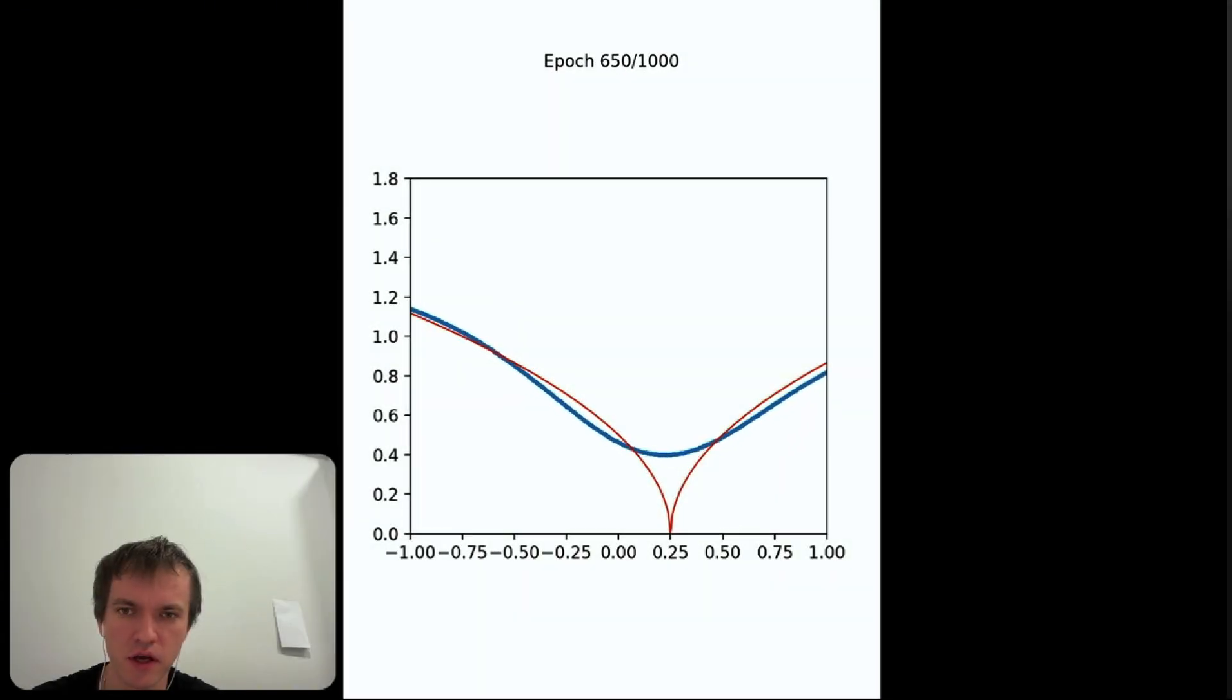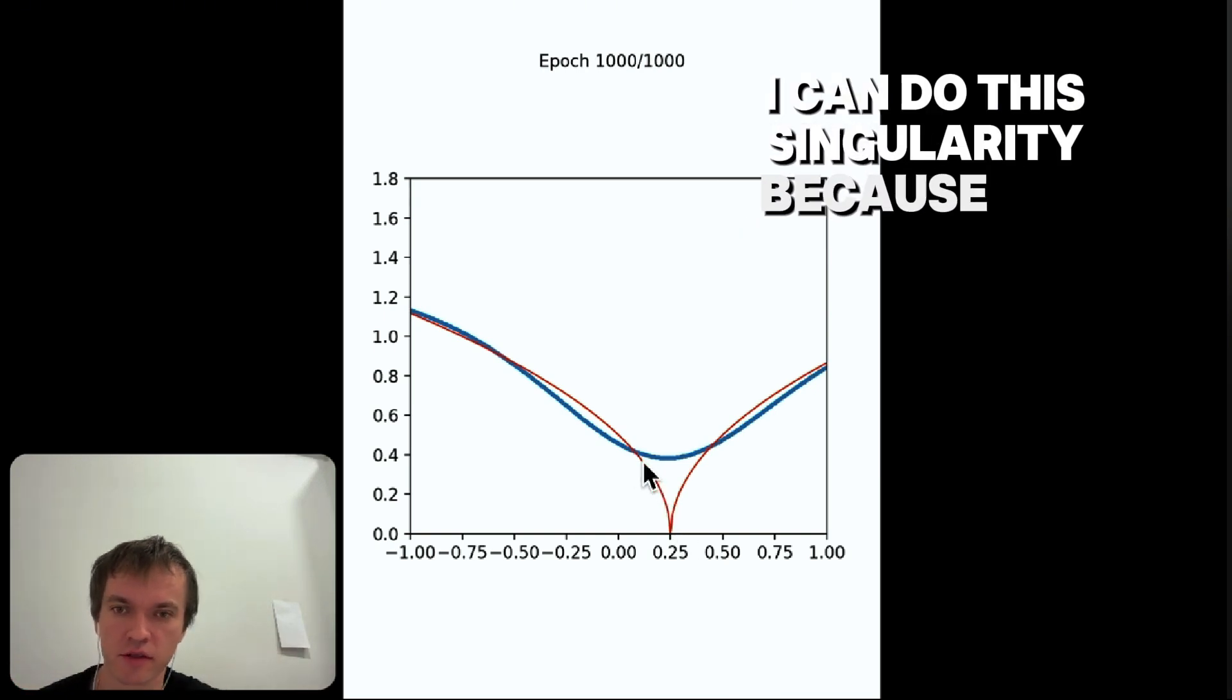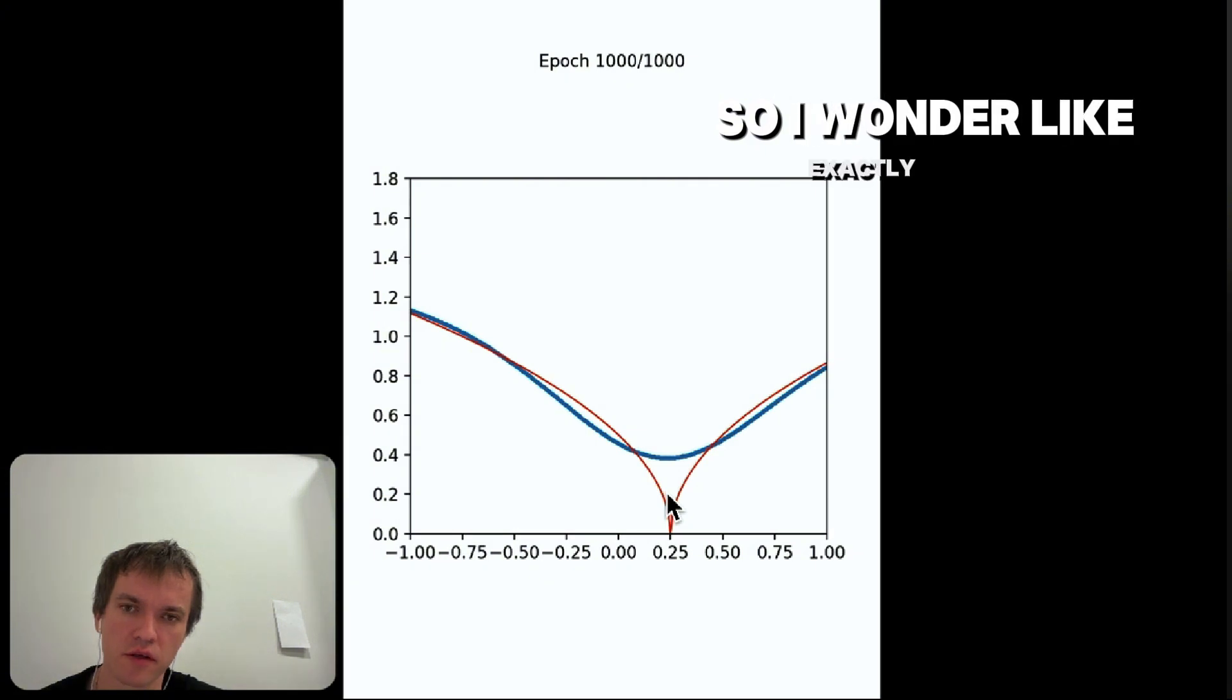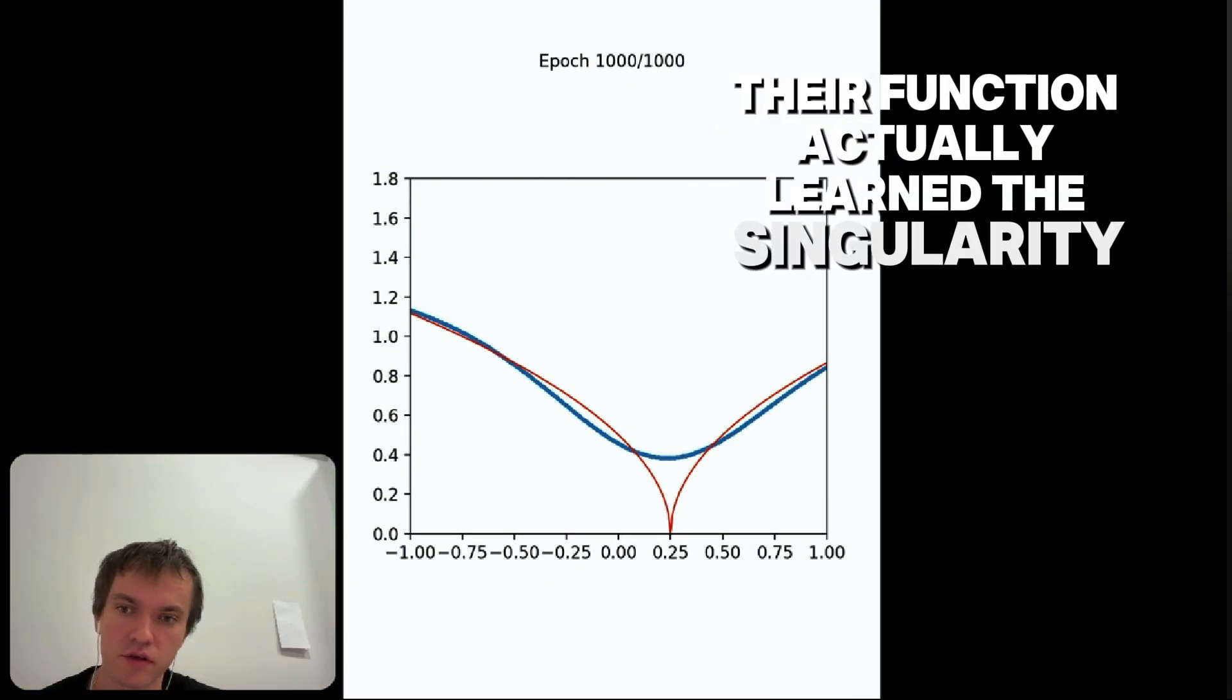Now the network is going to learn this, and unfortunately it cannot learn under this singularity because the slope here shoots to infinity. So I wonder exactly how they got that their function actually learned the singularity because we have exactly the same parameters but different activation function.